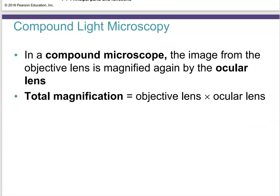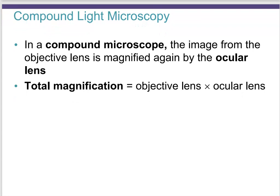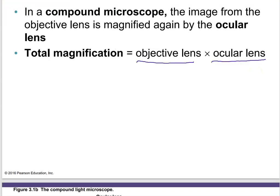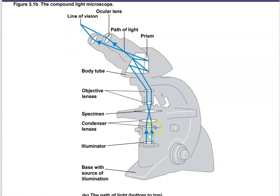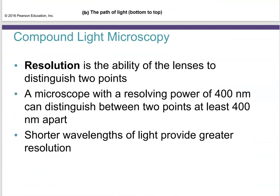For total magnification, it's the objective lens power times the ocular lens power. The path of light through a light microscope shows how light gets refracted several times: from the light source, through the condenser lens, through the objective lenses, through a prism, and finally through the ocular lenses. In the end, we are looking at an inverted image because the image is inverted three times.